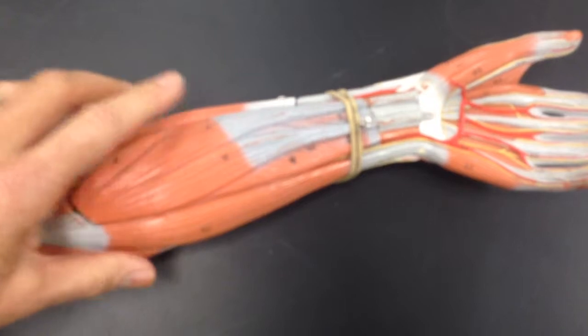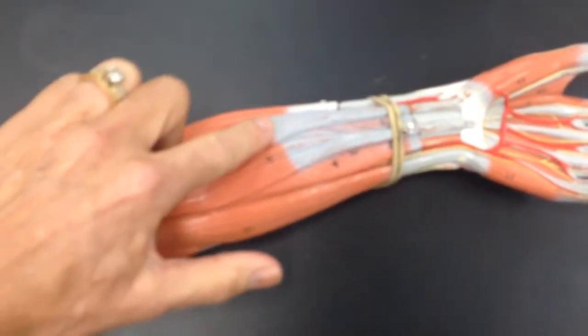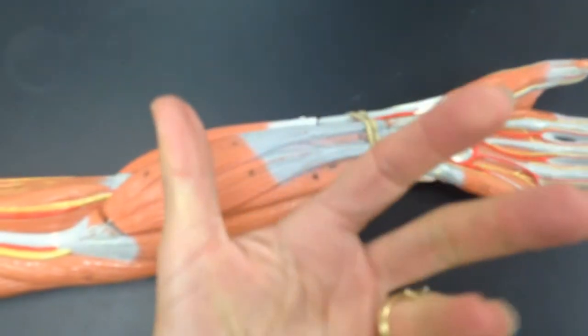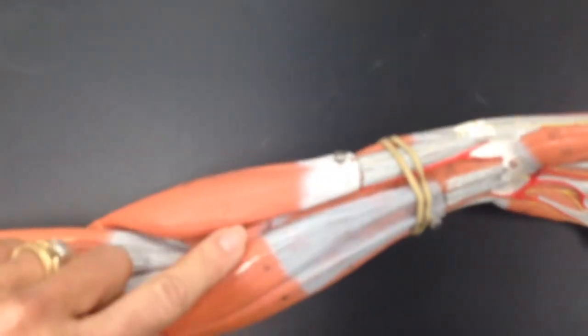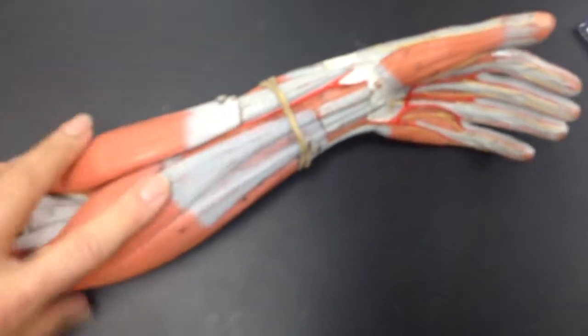Here, what does this muscle do? Well, it flexes, and it goes to the radial side. So it flexes the wrist. Flexor carpi radialis.